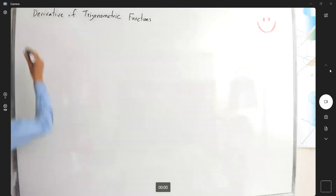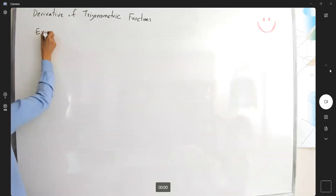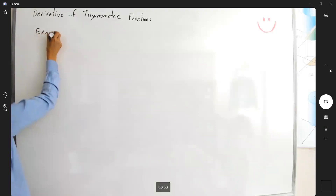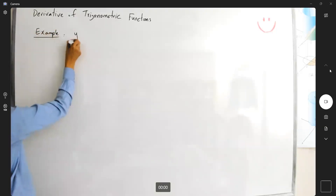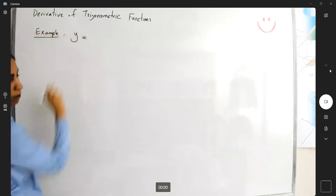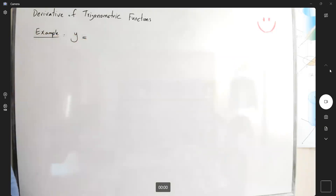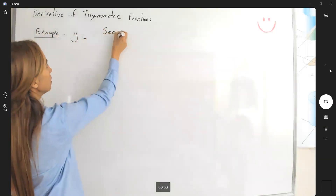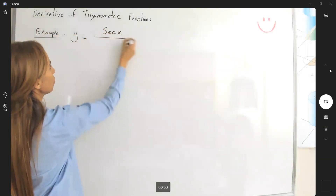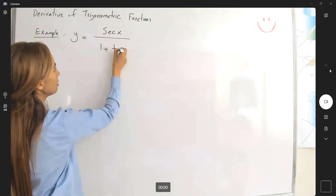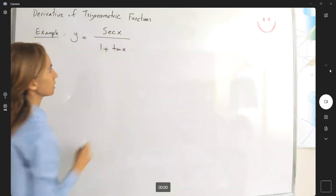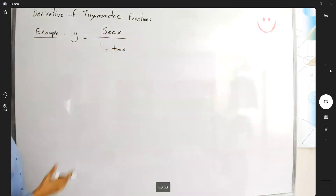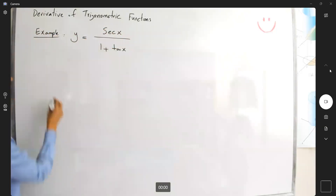In this example we have the following scenario: y is defined as secant x divided by 1 plus tangent of x. We will not simplify this function and will just start taking the derivative directly.